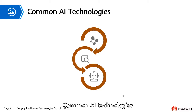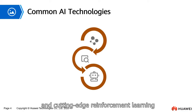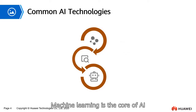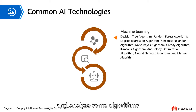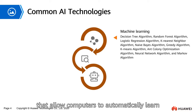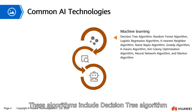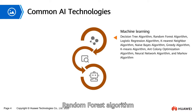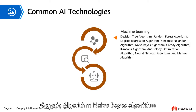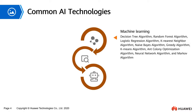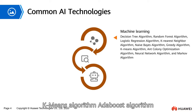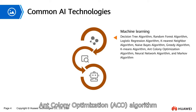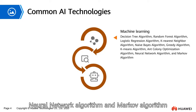Common AI technologies include traditional machine learning, deep learning, and cutting-edge reinforcement learning. Machine learning is the core of AI — mainly designing and analyzing algorithms that allow computers to automatically learn. These algorithms include decision tree, particle swarm optimization (PSO), random forest, logistic regression, support vector machine (SVM), genetic algorithm, naive Bayes, k-nearest-neighbor, greedy algorithm, k-means, AdaBoost, ant colony optimization (ACO), neural network, and Markov algorithm.